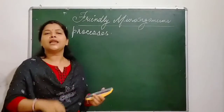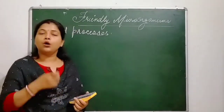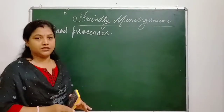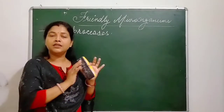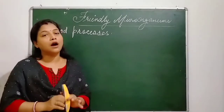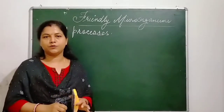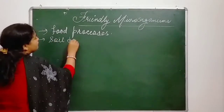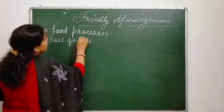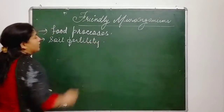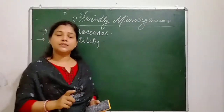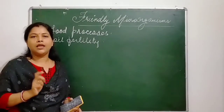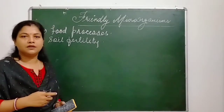These microorganisms are useful for food making processes like pickling, brewing, or for making different types of food. They are also used for preservations. They are also very much useful in soil fertility — how? These microorganisms decompose dead plants and animals in the soil and increase the humus.